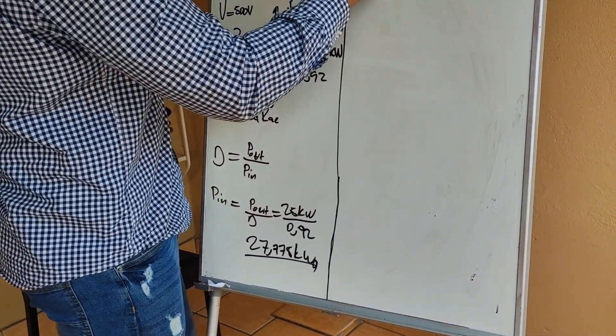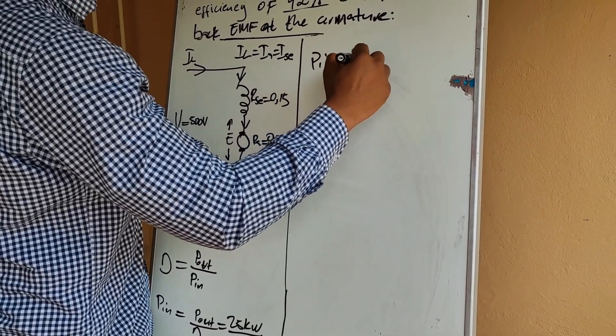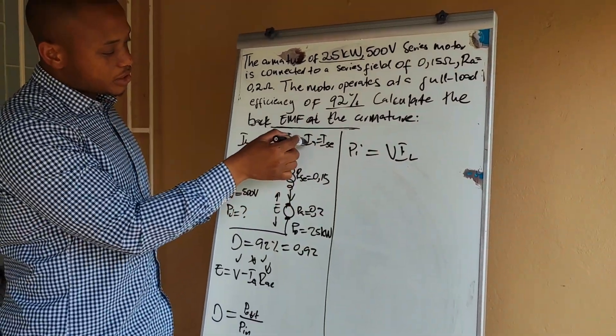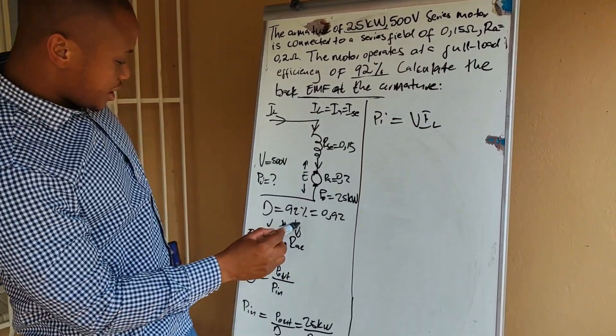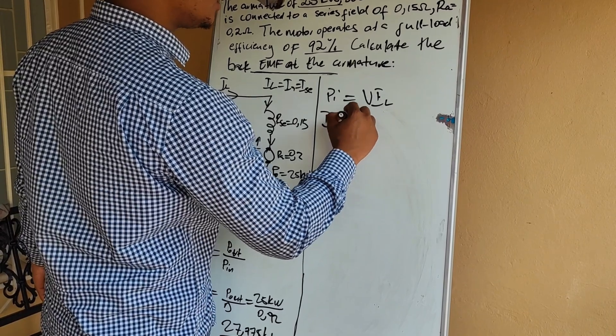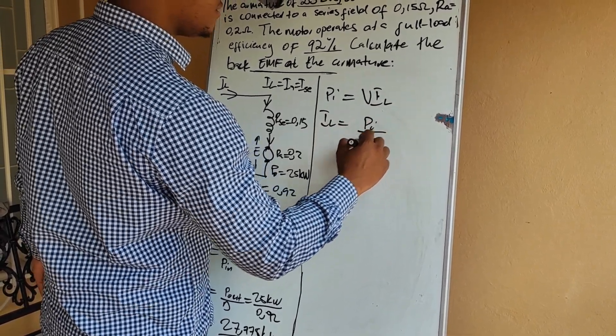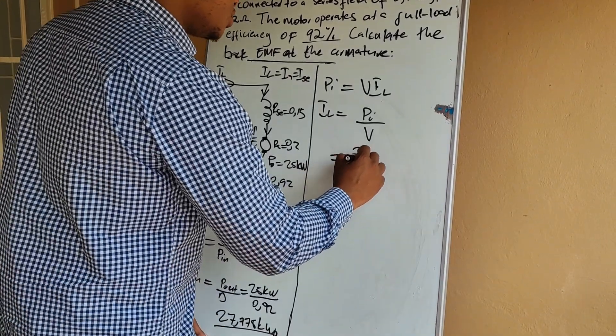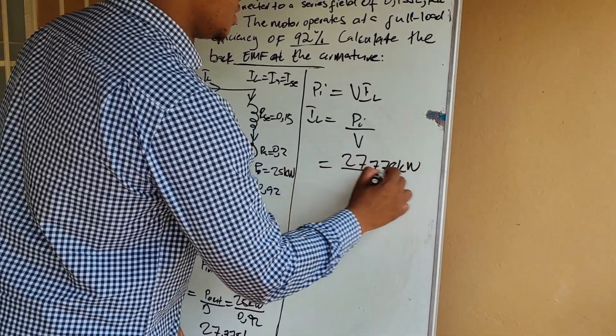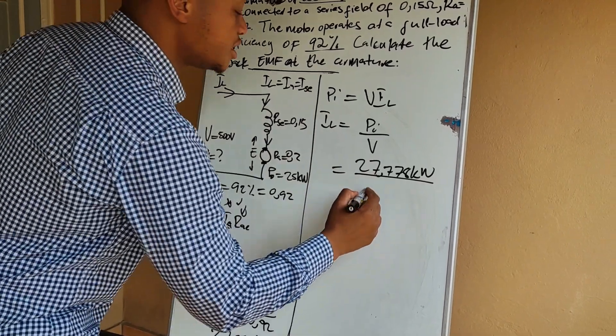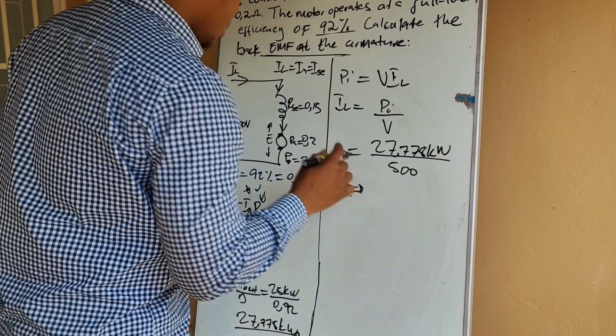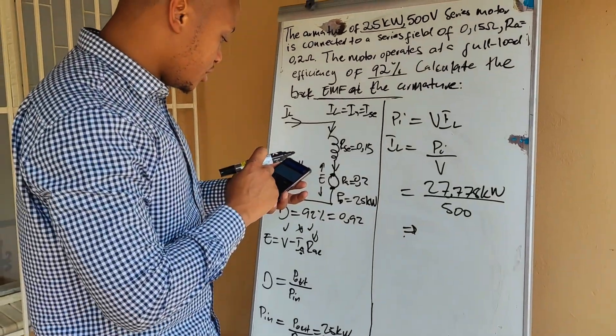But we know that the input power P in is equal to V multiplied by IL. We want to calculate the value of IL so that we can have IA and substitute it in this equation. So IL is equal to P in divided by V which is equal to 27.778 KW divided by 500 volts.